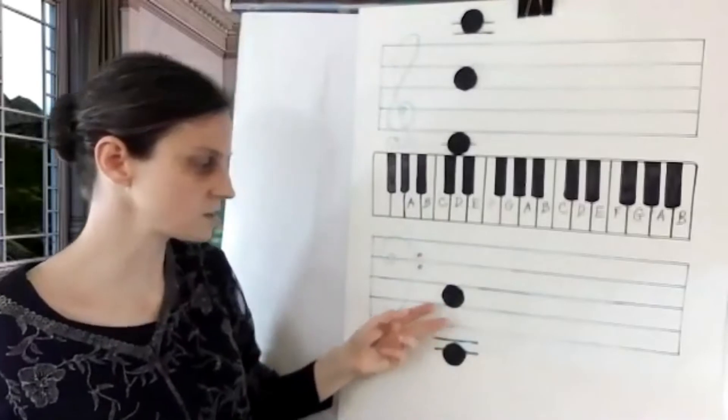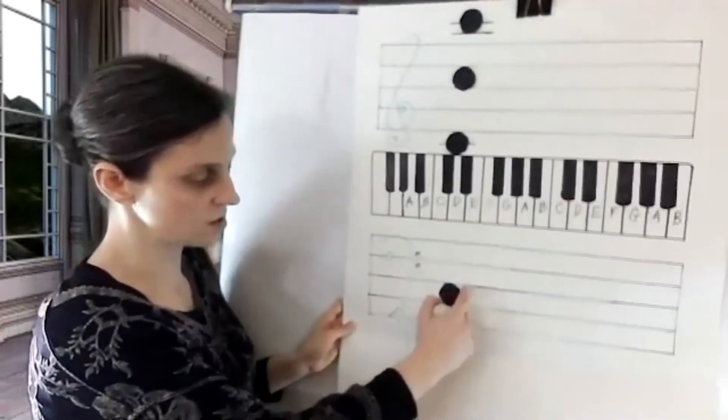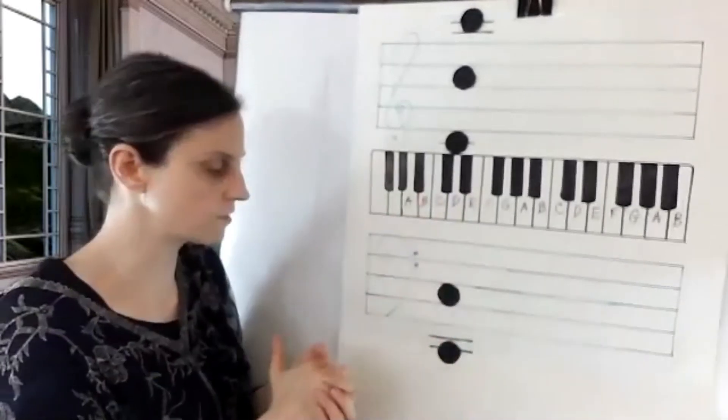I know that the second space from the bottom is C. So you go C, D, E, F. And there you have it.